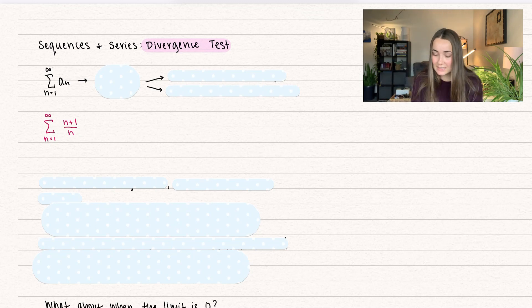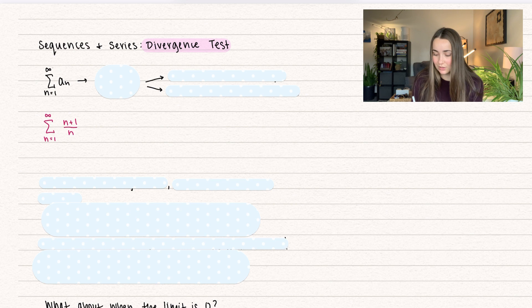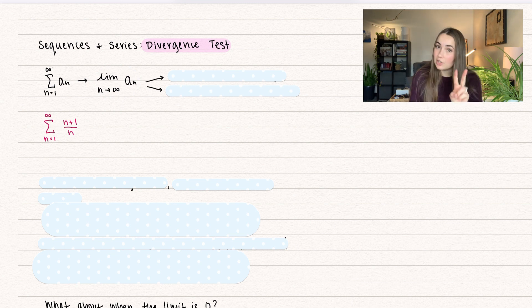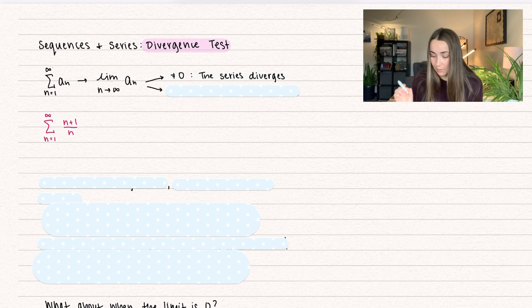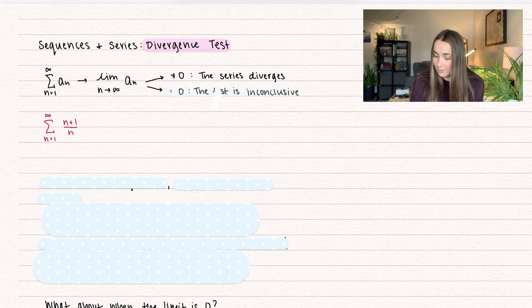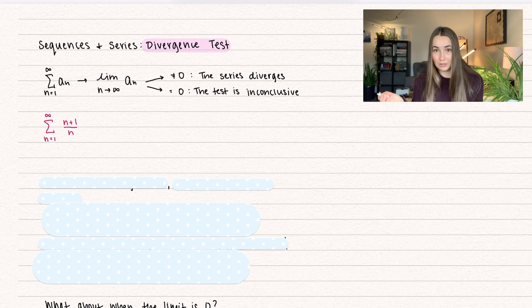What is the divergence test? We take an infinite series — the series from n equals 1 to infinity of our terms a sub n. For the divergence test, we take the limit as n goes to infinity of our terms. There are two options: if the limit is not equal to 0, the series diverges. If the limit is equal to 0, the test is inconclusive.